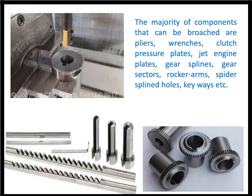Some more figures show products done with the help of broaching operations, and surface broaches are also shown. The majority of components that can be broached include pliers, wrenches, clutch pressure plates, jet engine plates, gear splines, gears, rocker arms, spider spline holes, keyways, and more.